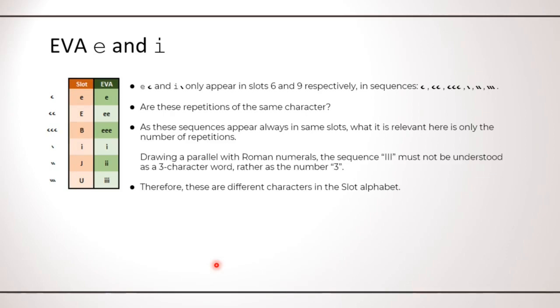In this slide, I discuss E and I, which appear in slot 6 and 9 respectively, and they appear as sequences of one, two or three symbols. Again, are these distinct characters or repetition of the same characters? Since these sequences appear always in same slot, what I think is relevant is only the number of repetition.